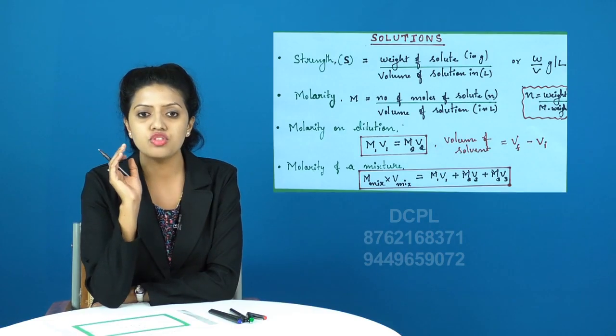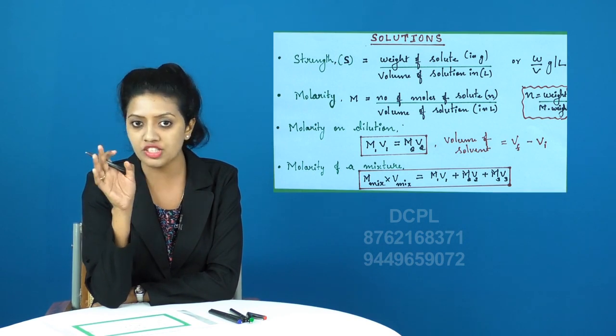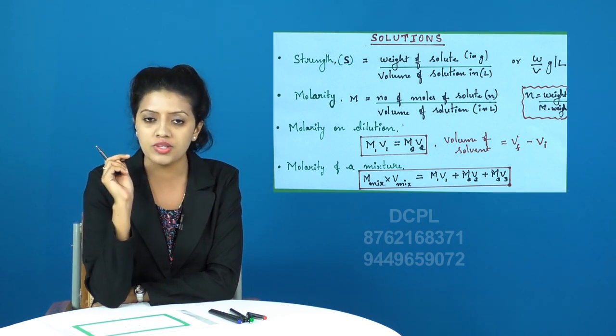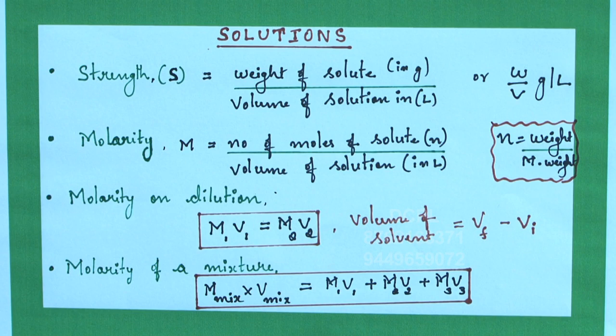If we have to find out the molarity of a mixture when there are more than two components, then we can make use of this expression: molarity mix times V mix equals M1V1 plus M2V2 plus M3V3. Otherwise, molarity mixture equals M1V1 plus M2V2 plus M3V3 divided by V mix.